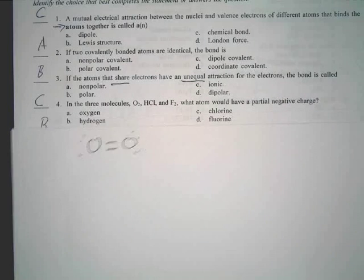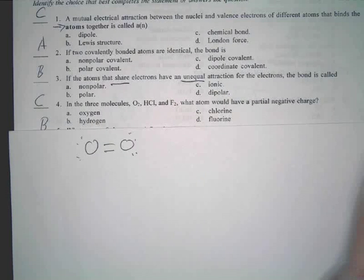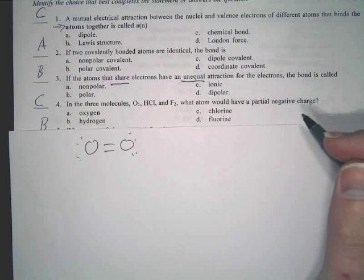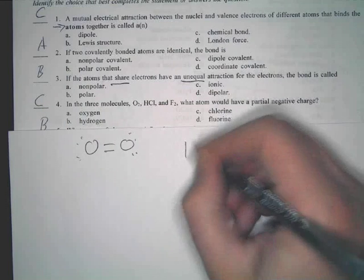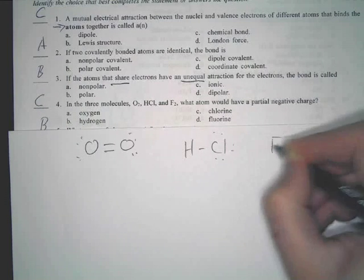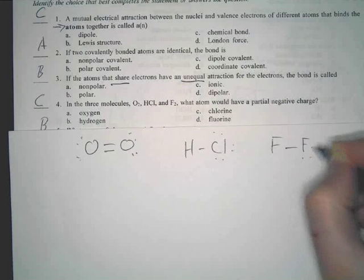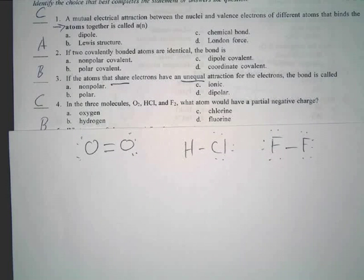Unequal and sharing. Covalent bonds that are shared unequally are polar. That's the whole point. Does that make sense? Now, four probably does require a bit of explanation. What they want you to do is first determine what's going to have a partial negative charge. That means you've got to figure out what's polar. So, we've already drawn O2, HCl looks like this, F2 looks like this. What is the only molecule here that's not polar? Or, pardon me, that is polar. This is the only polar one.